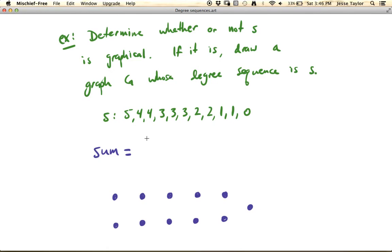So how many odd degree vertices do we have? One, two, three, four, five, six. So there are six odd degree vertices, which means this thing should be graphical. So let's take their sum.